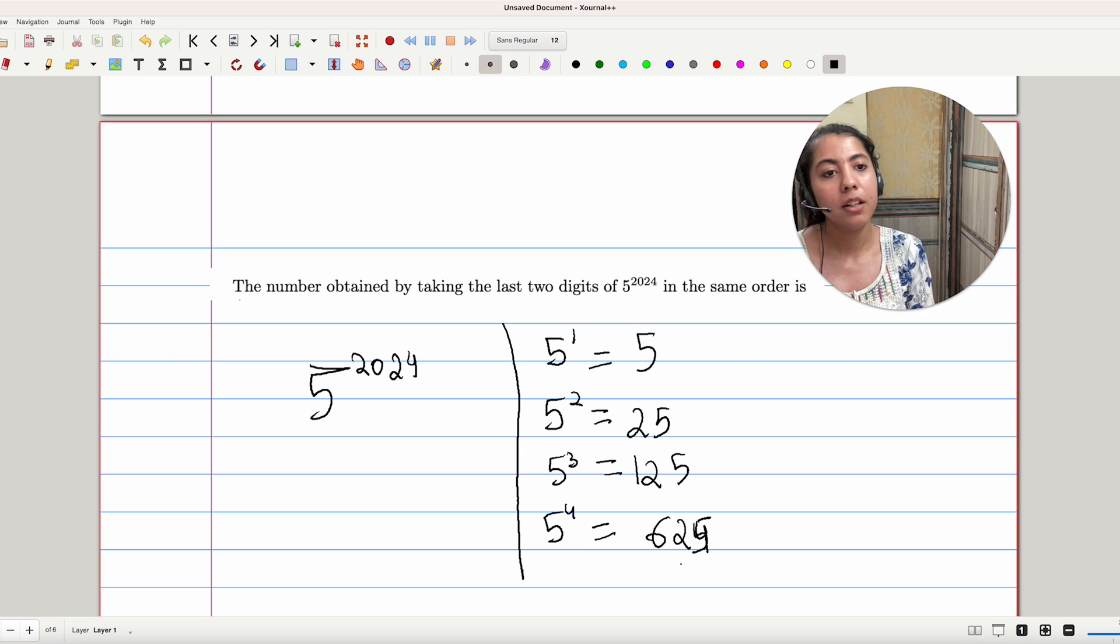From here we can conclude that the last two digits for any power of 5 will be 25.